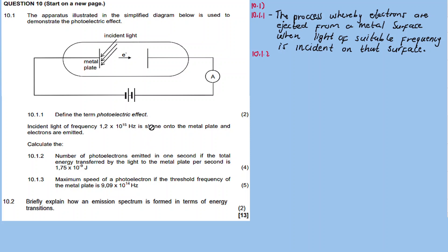In order to calculate the number of electrons, we need to find out the number of photons hitting the metal sheet. A photon is a packet of energy. A beam of light contains many photons, each carrying energy. Each electron requires one photon to be ejected. So the energy carried by one photon can be calculated as E equal to Planck's constant times frequency. This is the energy of one photon.